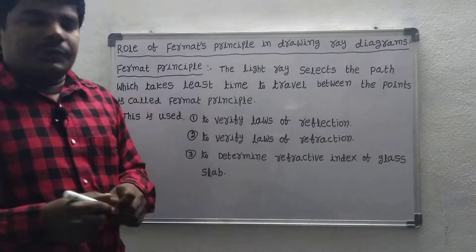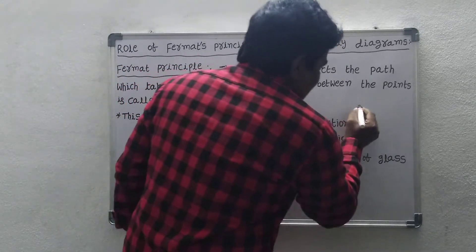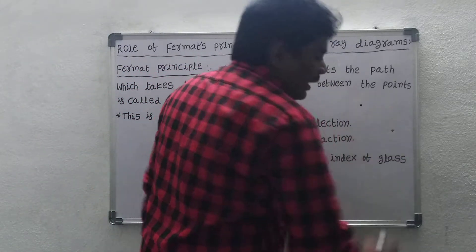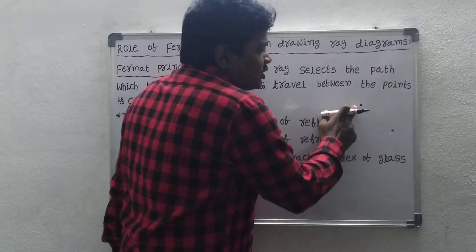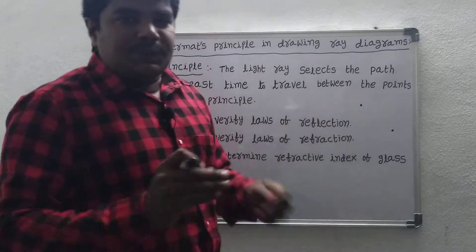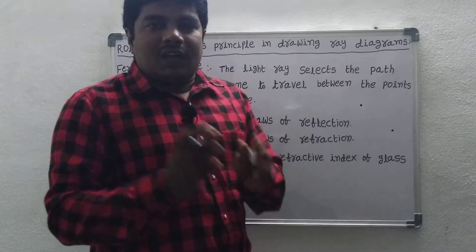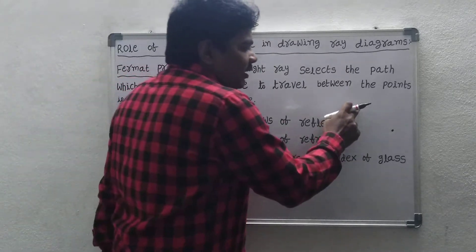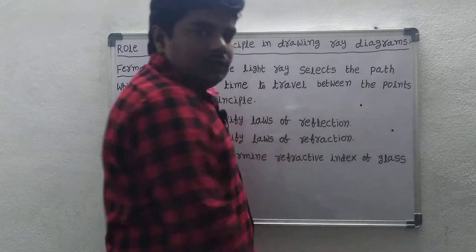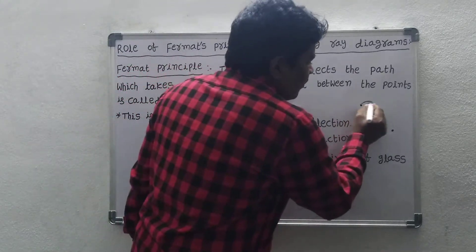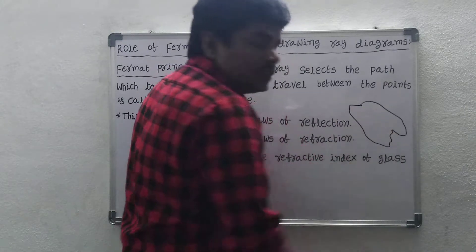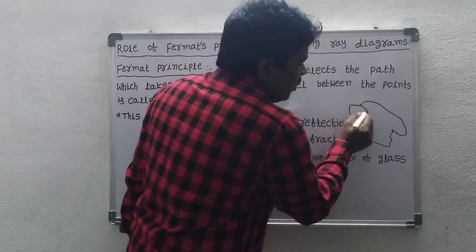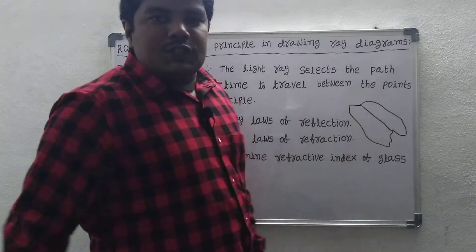Fermat's principle means we take two points like this. The light has to travel from this point to this point. Which path does it select to travel from this one to this one? Or is this path, or this path, or this path?